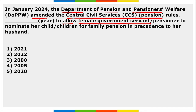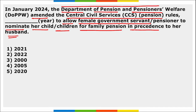The Department of Pension and Pensioners' Welfare amended the Central Civil Services Pension Rules of 2021 to allow female government servants or pensioners to nominate their child or children for family pension in precedence to her husband. In the event of the death of the female government servant or pensioner, the family pension will be dispersed to a widower without eligible children, widower with minor children, or widower with children who have attained majority but are eligible for family pension.